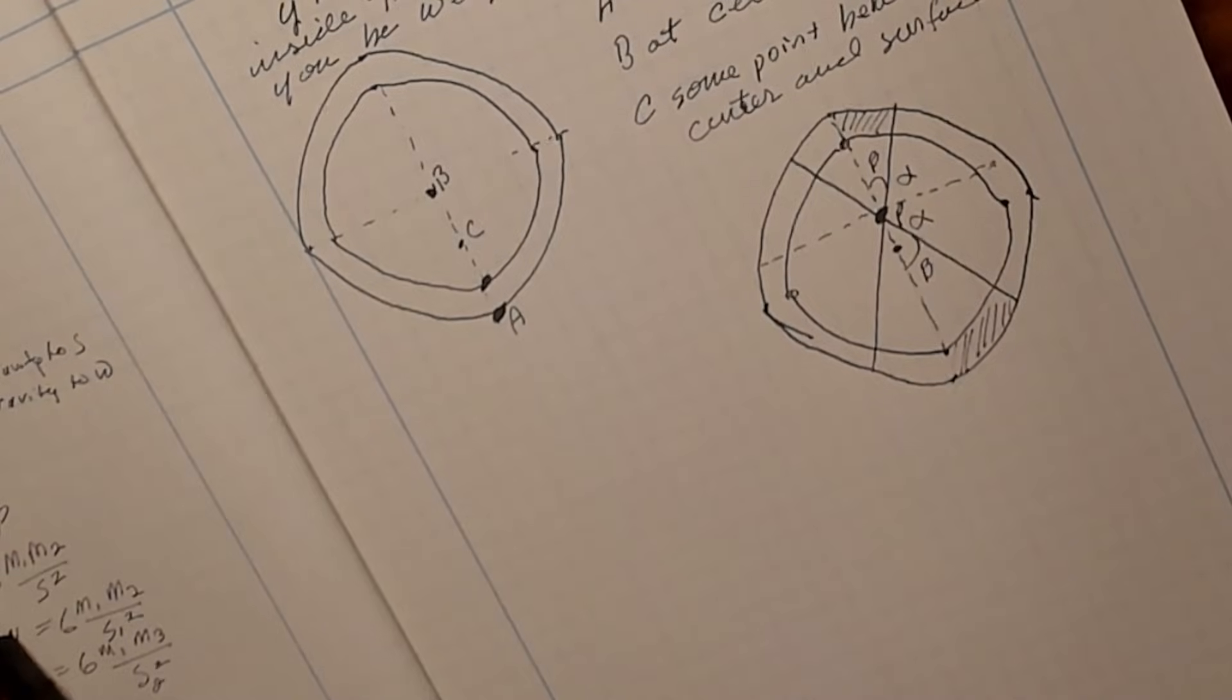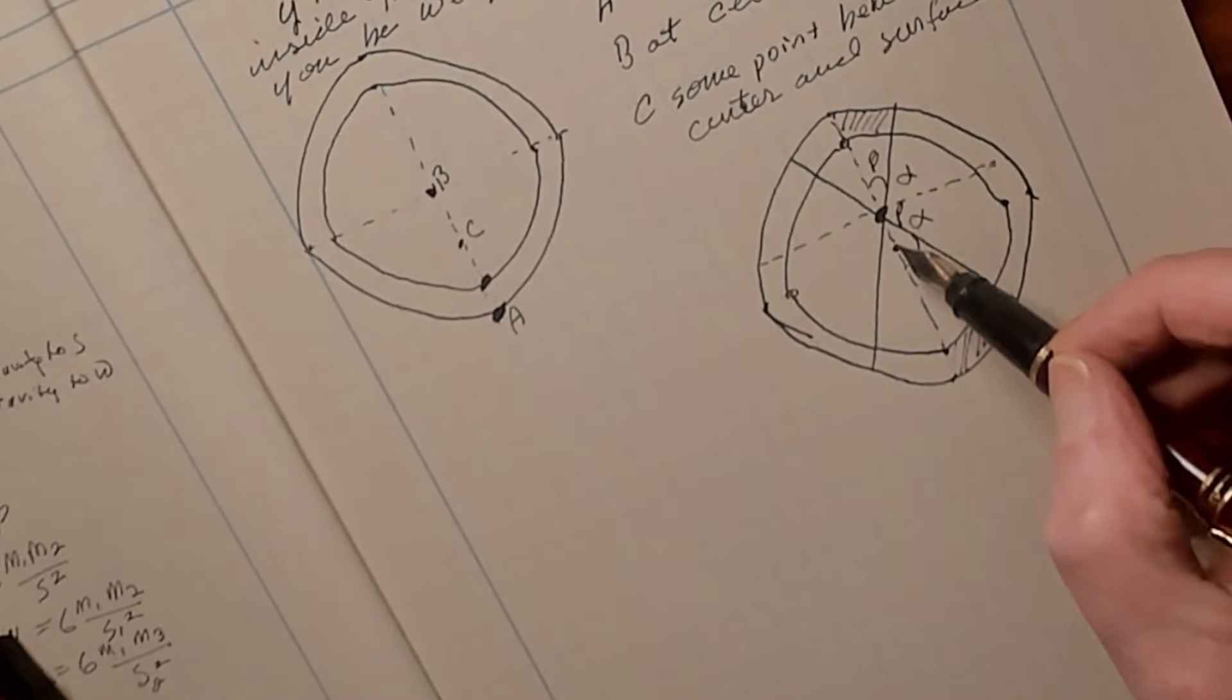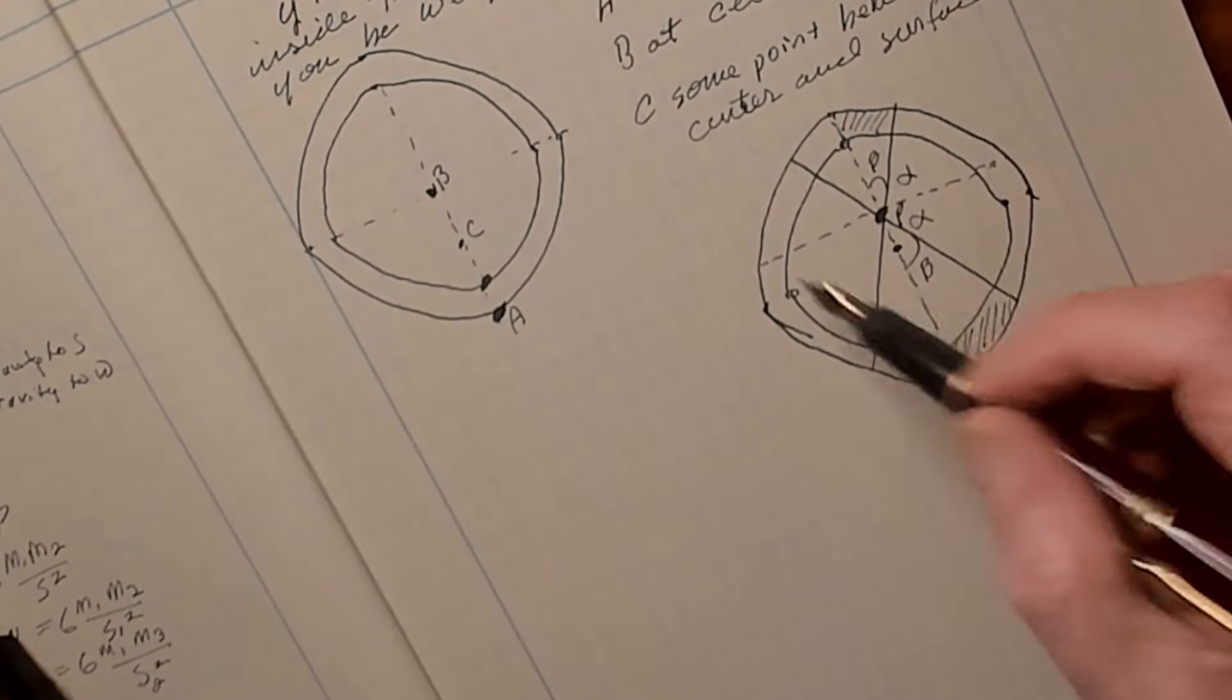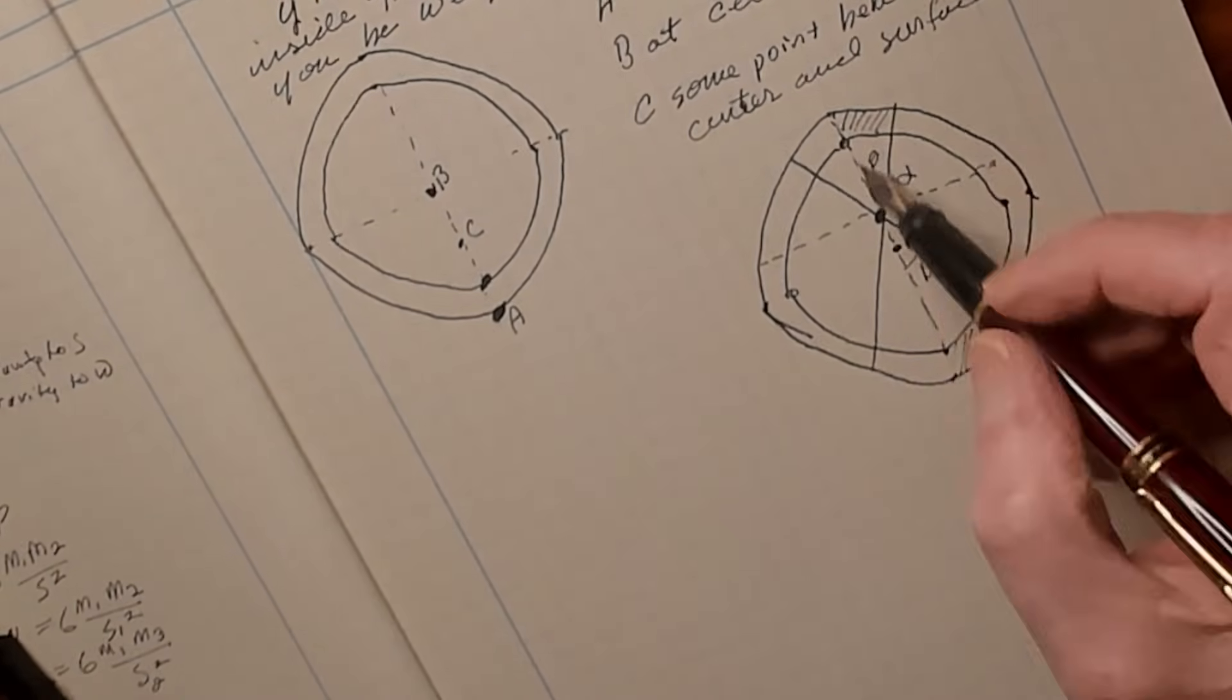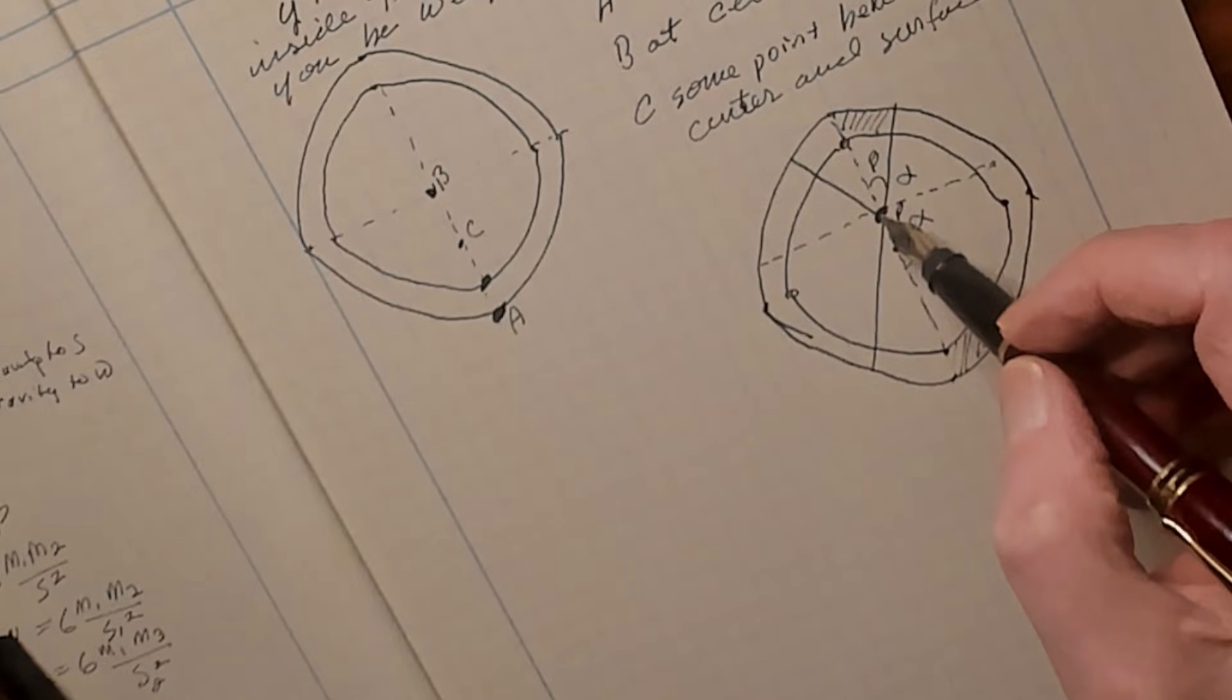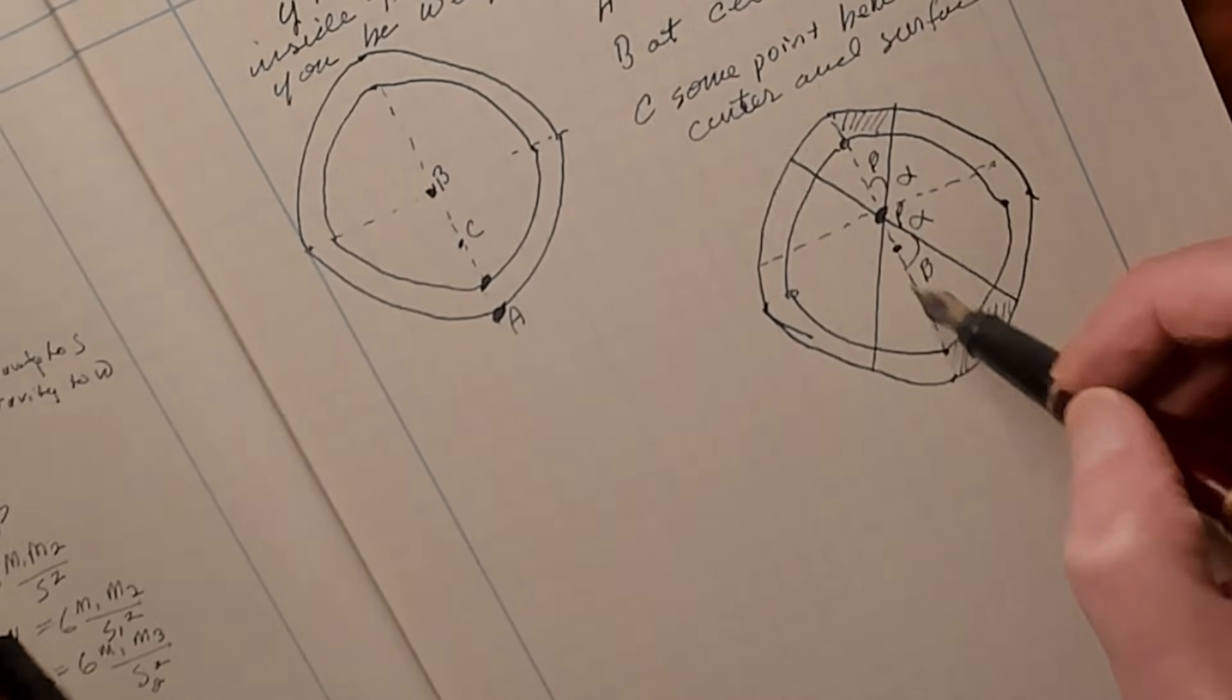Now to solve this, we're going to use something called the method of two cones. So basically, here is the center of this circular shell. And here's the thickness of the shell. And it has mass. Our point P is somewhere offset from the center of that circle.